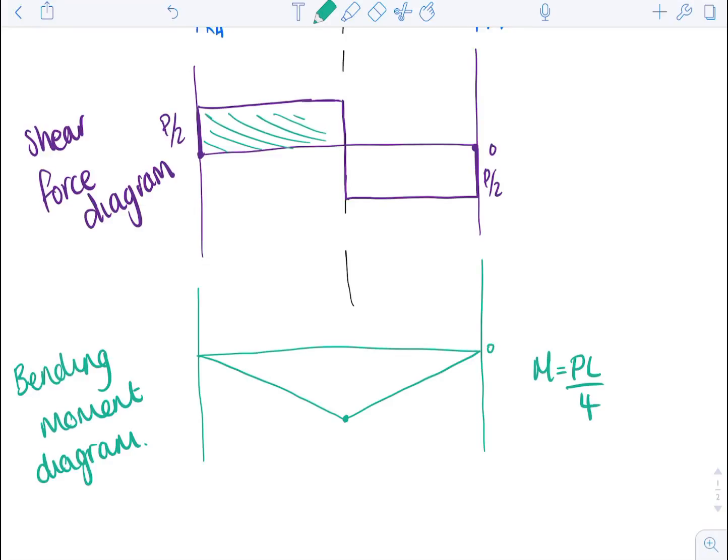So the area under the shear force diagram is equal to the moment up until that point. So in this case, you've got a length of L over 2 and you've got a height of P over 2. So the area is P over 2 times L over 2, which is equal to PL over 4.